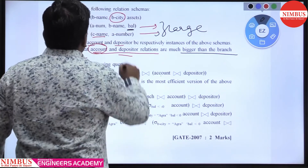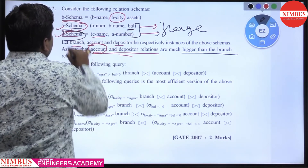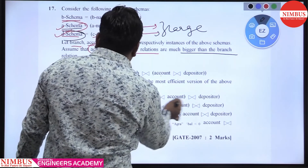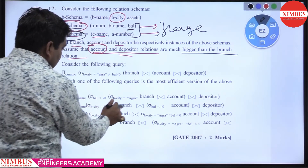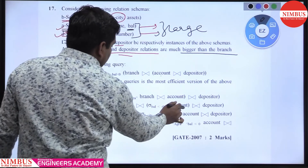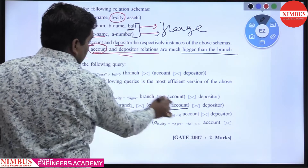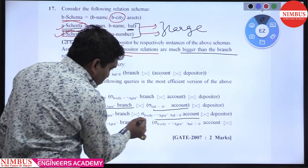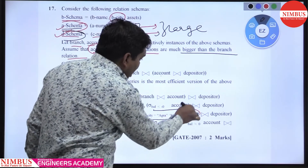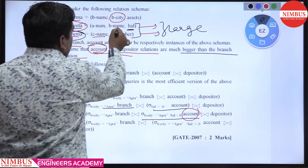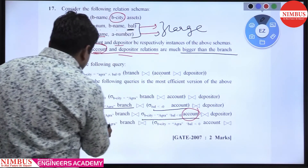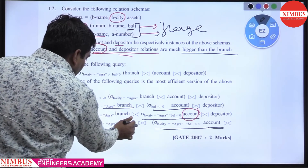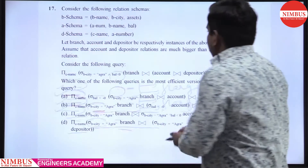It is clearly mentioned that account and depositor schemas are larger. So we first find branch_ct equal to AGRA from branch, then join with account schema. Some options are wrong because branch_ct equal to AGRA is not in the account schema — account schema contains only account number, balance, and branch name. Joining account and depositor again after already filtering is also incorrect.